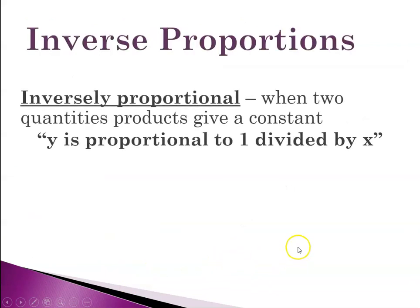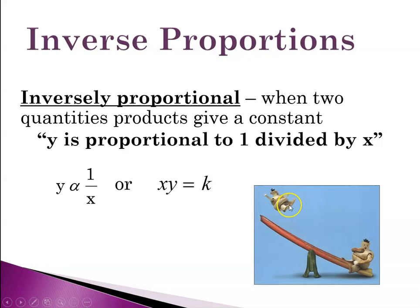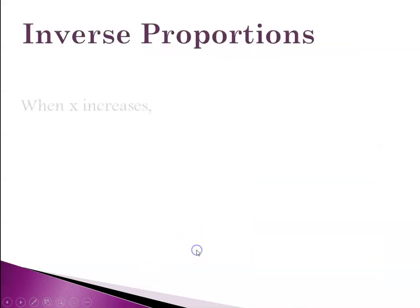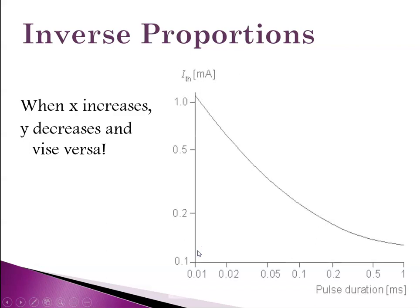And so then you have an inverse proportion and that's when two quantities products give a constant. So y is proportional to 1 divided by x. So y is proportional to 1 over x or xy equals a constant. And again the inverse relationship. One goes up the other goes down. So when x increases y decreases and vice versa. So graphically it would look like that. So as this one increases this one is decreasing. And so one goes up and one goes down.